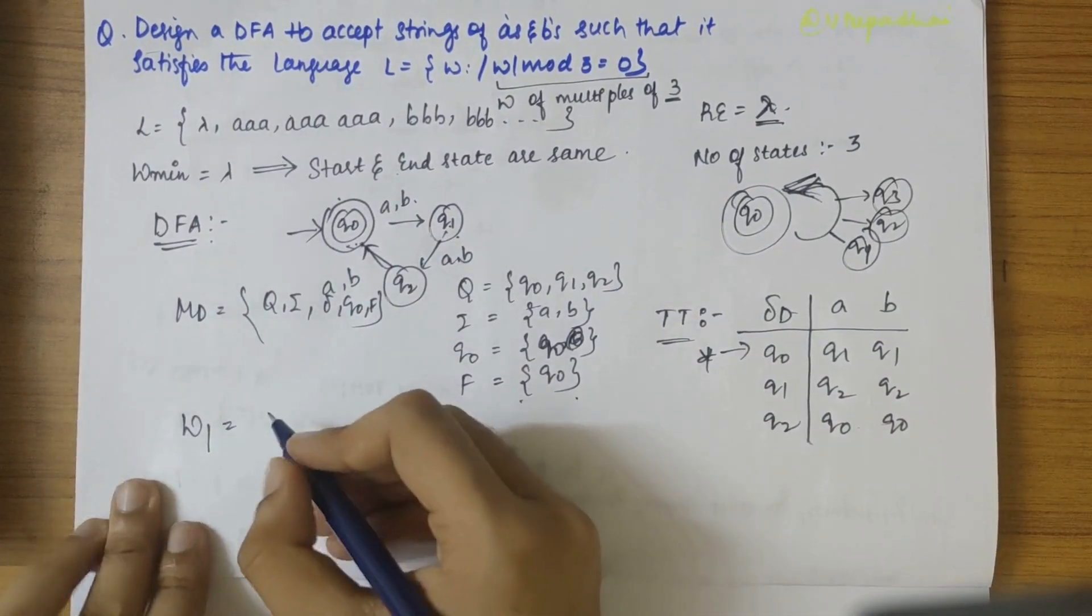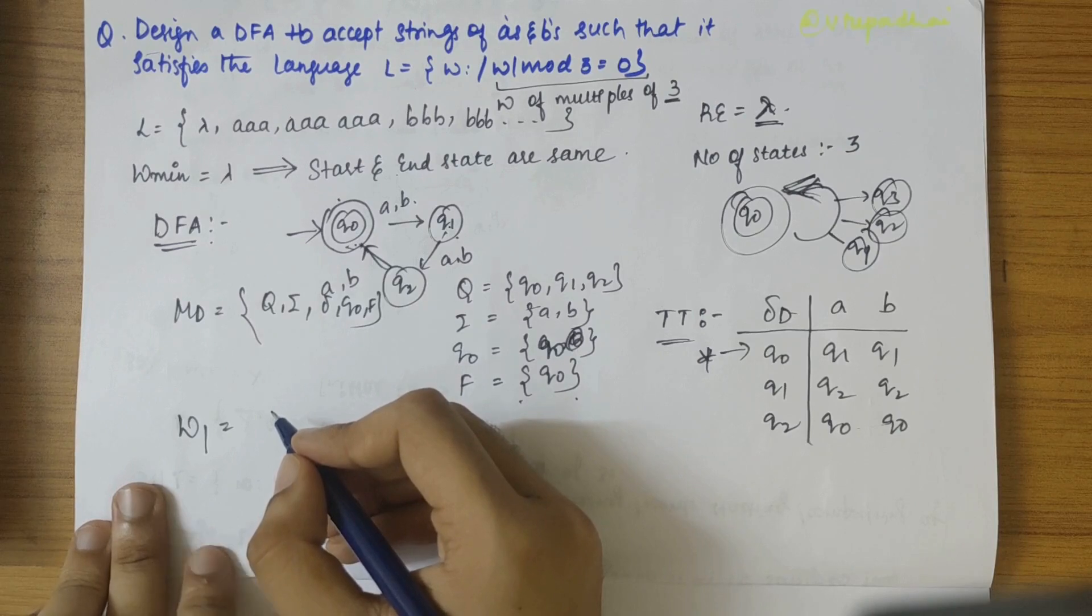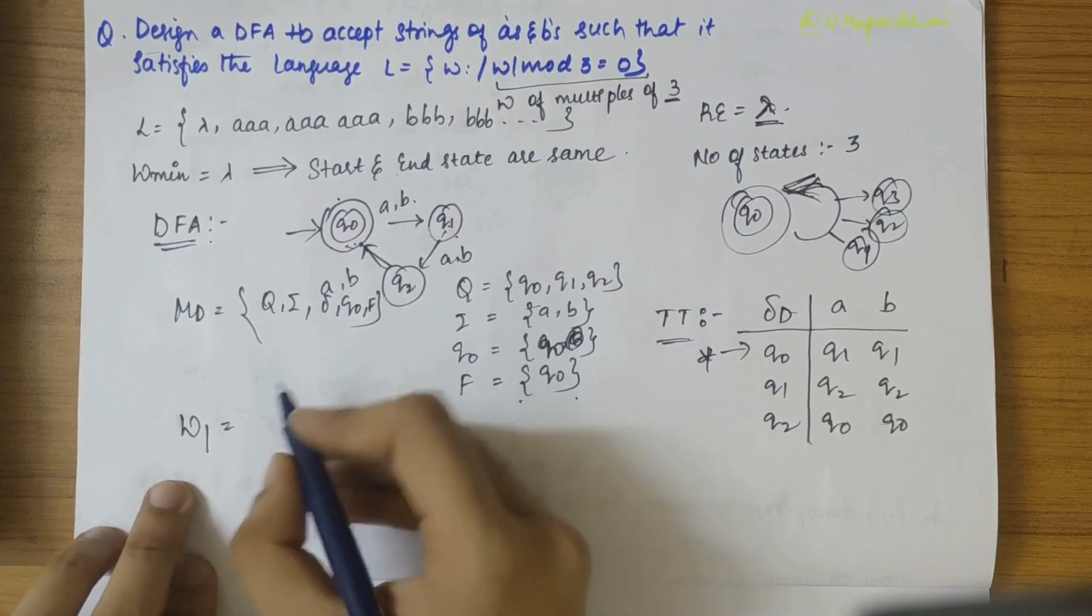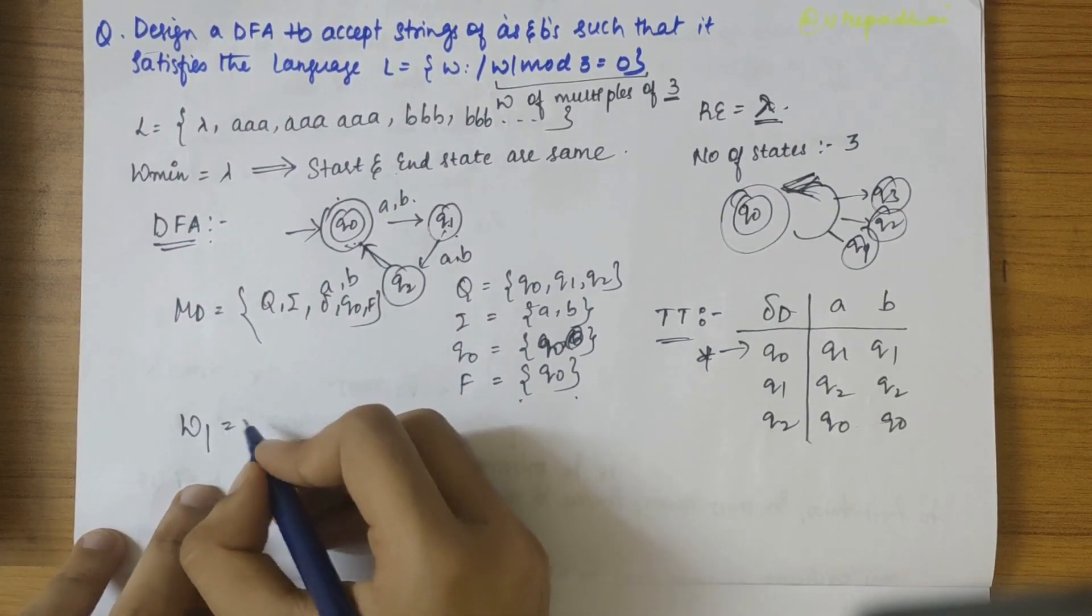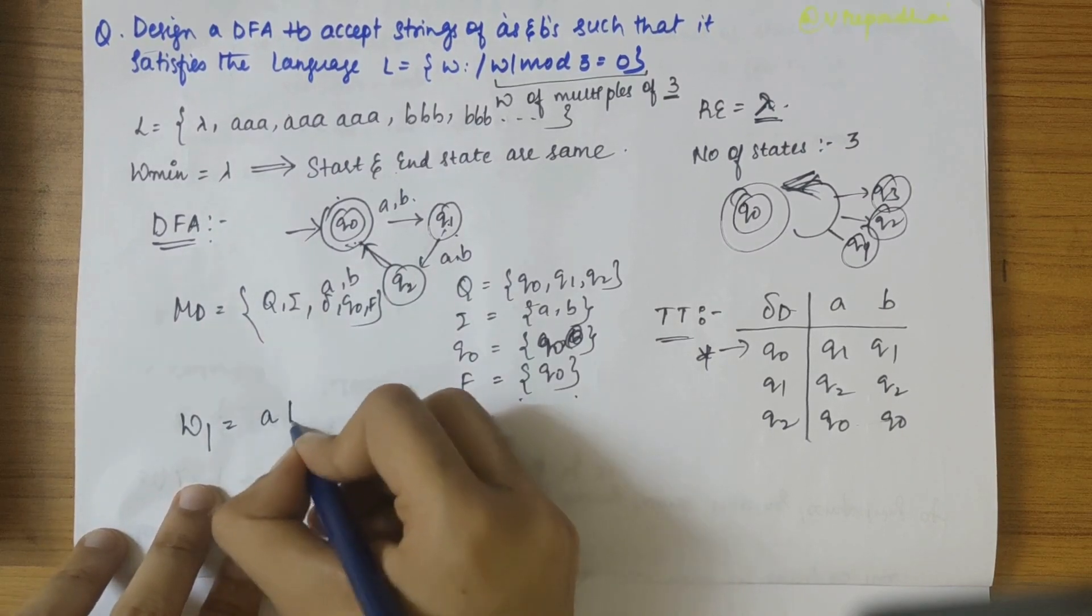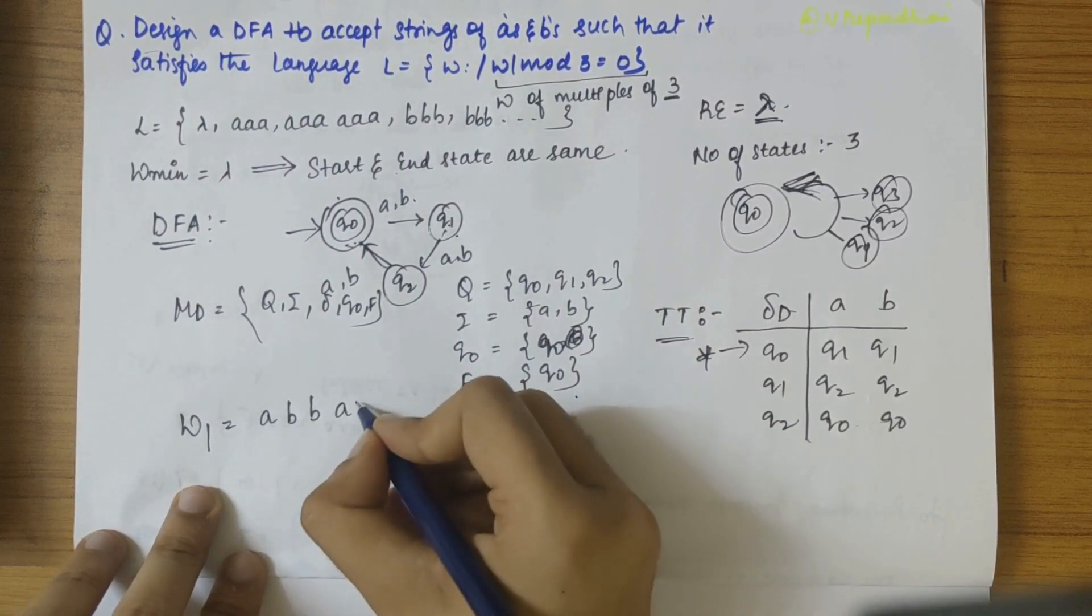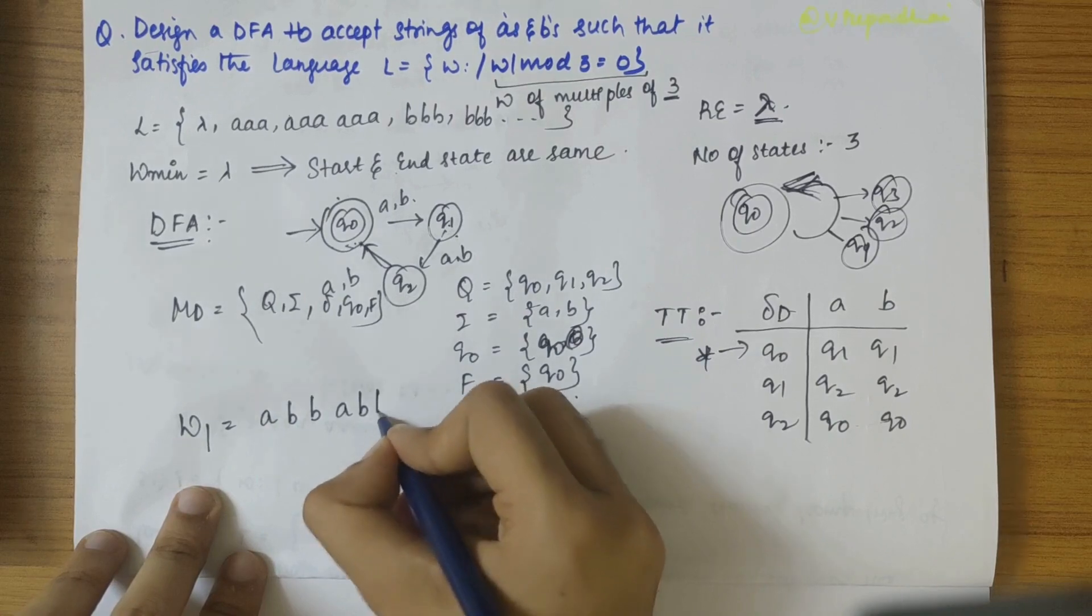Next step would be taking two strings to show sequence of moves made by the DFA design. So one would be to accept and the other one would be to reject. So it will be A, B, B, A, B, B.